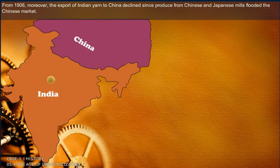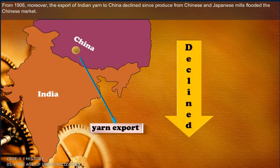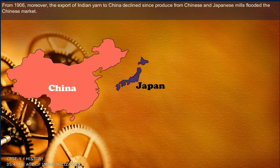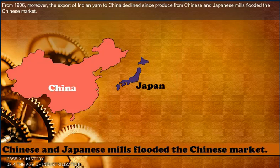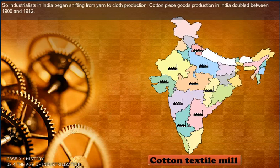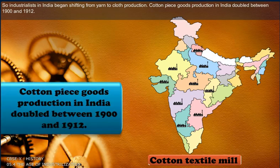From 1906, moreover, the export of Indian yarn to China declined since production from Chinese and Japanese mills flooded the Chinese market. So industrialists in India began shifting from yarn to cloth production. Cotton piece goods production in India doubled between 1900 and 1912.